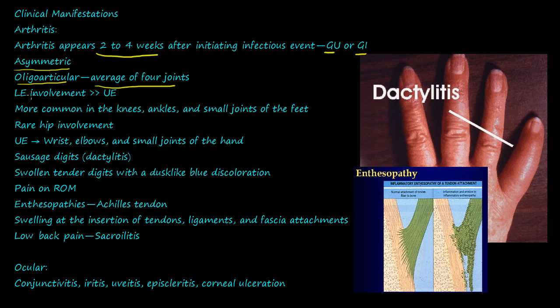Lower limb involvement is greater than upper extremity. It's more common in the knees, ankles, and small joints of the feet — hence, can't dance. It's rare in the hip. If it does occur in the upper extremity, it affects the wrist, elbows, and small joints of the hand.